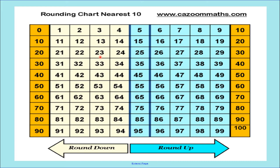Let us try to understand it with the help of one example. Suppose I want to round the number twenty-three. I have to check: twenty-three lies between which two tens? It lies between twenty and thirty. Twenty is the lower ten and thirty is the higher ten. We can clearly make out that twenty-three is very much near to twenty, so it has to round down to twenty. Now suppose I want to round the number twenty-seven. Again, which two tens does twenty-seven lie between? It lies between twenty and thirty, and twenty-seven is very much near thirty, so it rounds up to thirty.